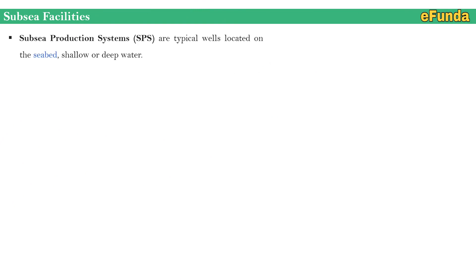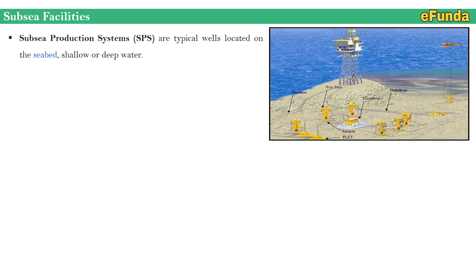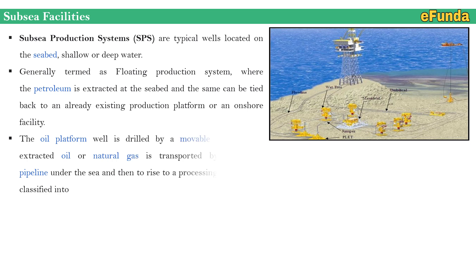Subsea production systems are typically wells located on the seabed, in shallow water or deep water. One can refer to the picture where the architecture of the subsea production systems is shown. Generally termed as a floating production system, petroleum is extracted at the seabed and can be tied back to an already existing production platform or an offshore or onshore facility.